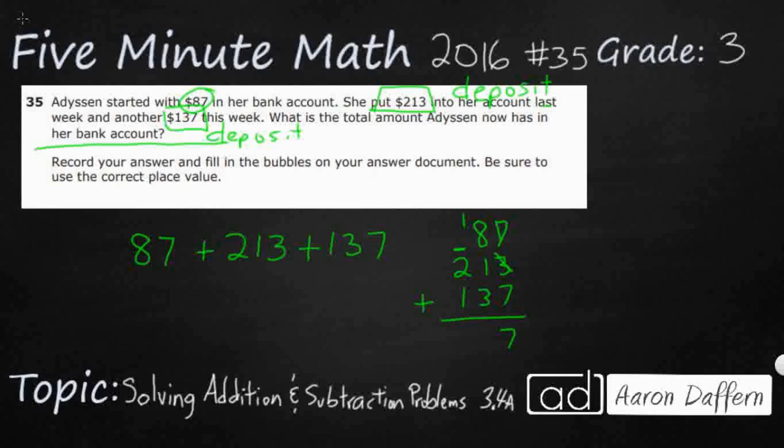And so 8, 1 and 1, that's going to be 10, and another 3 is 13. And I'll put that one right there. 1, 2, 3, 4. So I believe my answer is 437.